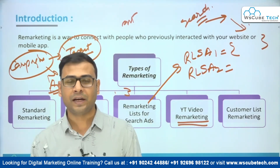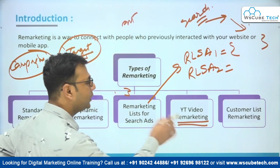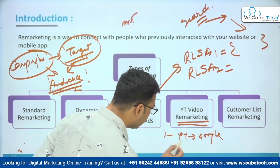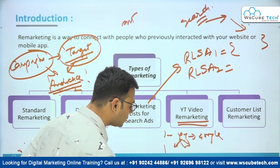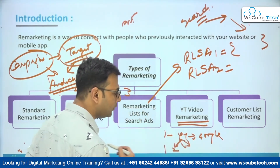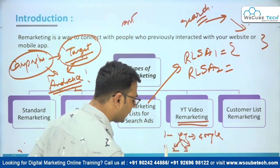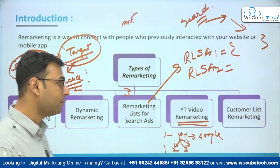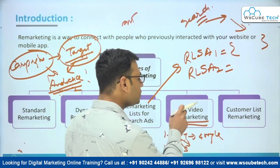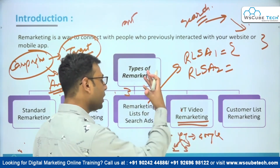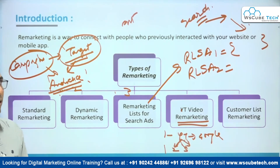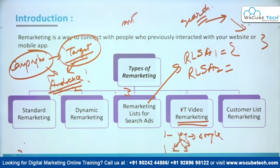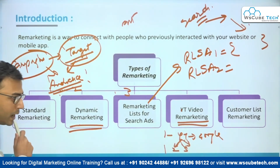For YouTube video remarketing, you link your YouTube channel to Google Ads. You can then select different videos and create audiences based on interactions — for example, anyone who visited a particular video, anyone who subscribed or didn't subscribe to your channel. Based on those interactions you create different audiences, then use those audiences to create campaigns and show ads. This is how YouTube remarketing works.